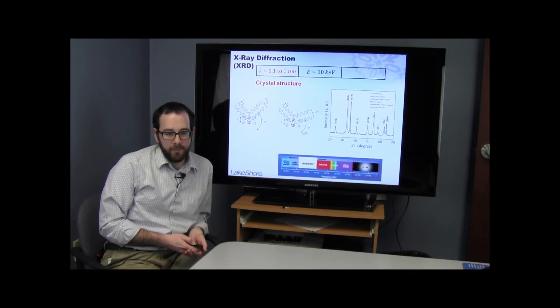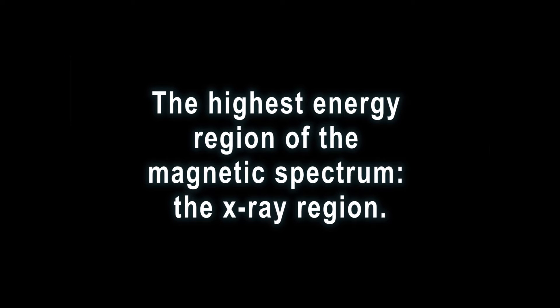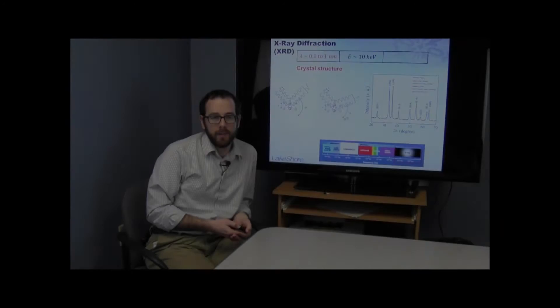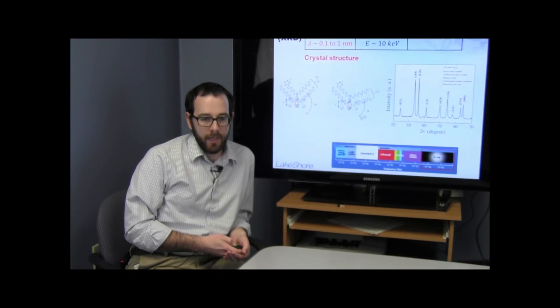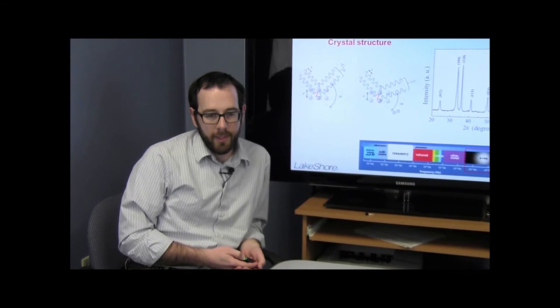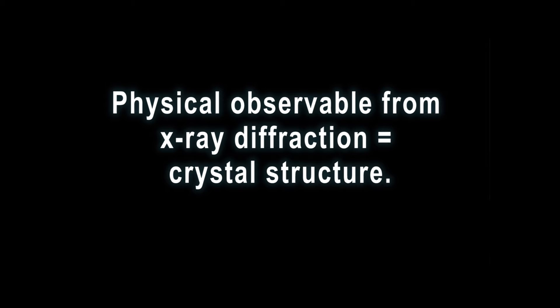Some examples of different wavelengths of light coupling to different physical phenomena start at the very highest energy region of the electromagnetic spectrum. In X-ray diffraction, the wavelength of light sits between about 0.1 and 1 nanometers — which is actually the length scale at which atoms in a crystal order themselves. The distance between atoms in a crystal is about a few nanometers apart, so when we shine X-ray light onto a surface and look at the angular scattering of that radiation, we're able to derive the crystal lattice spacing. Longer wavelength light simply cannot provide that information.